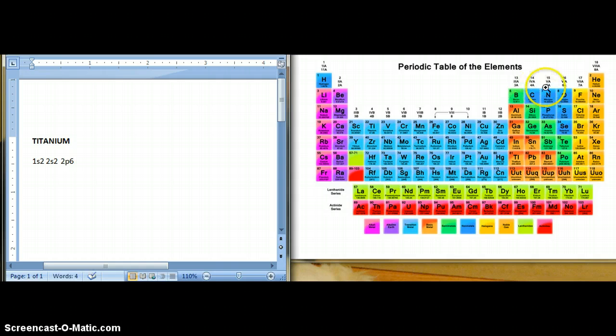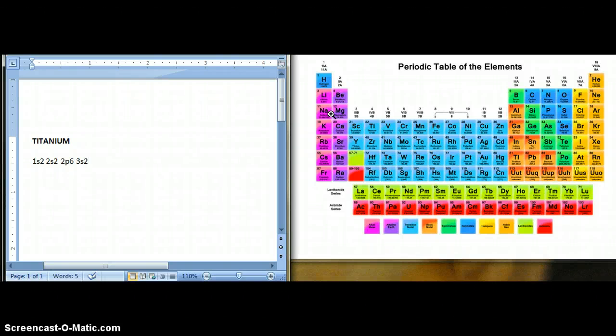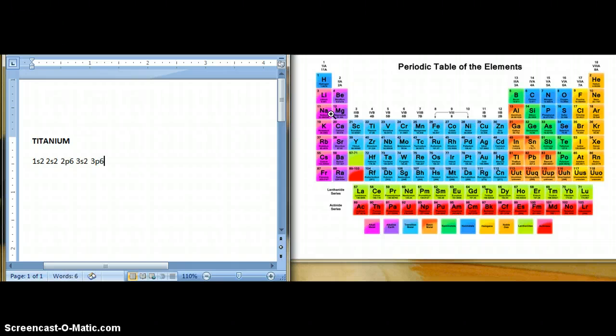For the next one, next level, you go to row 3 and you go back to the energy level S, which can hold 2 electrons. And then the next one, you keep going, go back to the P level, so you go 3P6 because the P level holds 6 electrons.